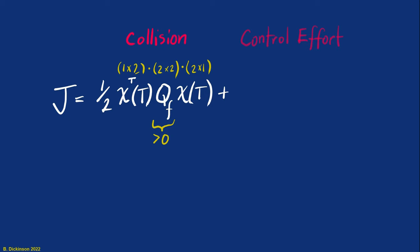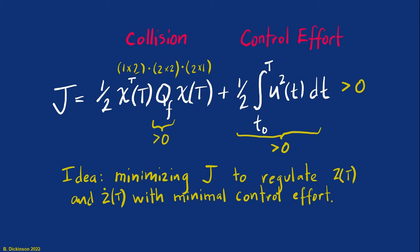The second term is the control effort term. And in contrast to this collision term, which is defined at a final point in time, the control effort term depends on the signal U of T. So we integrate that over the time interval from the initial time to the final time. And we're just going to use the square integral of this as a measure of its size. So the idea with J is that we minimize it to regulate the miss at the final time and possibly the relative velocity at the final time, all with minimal control effort.